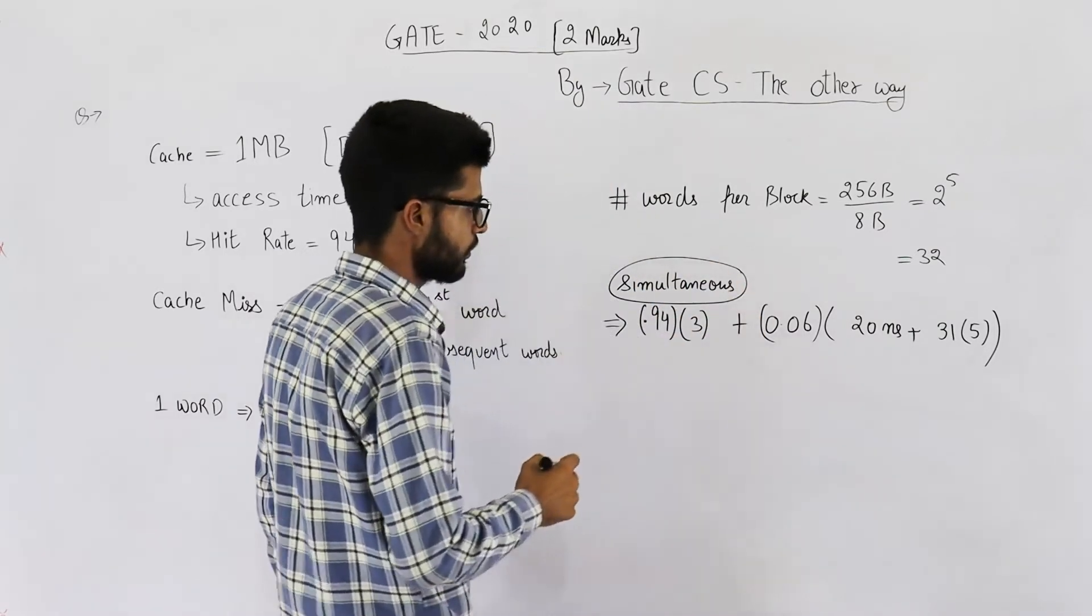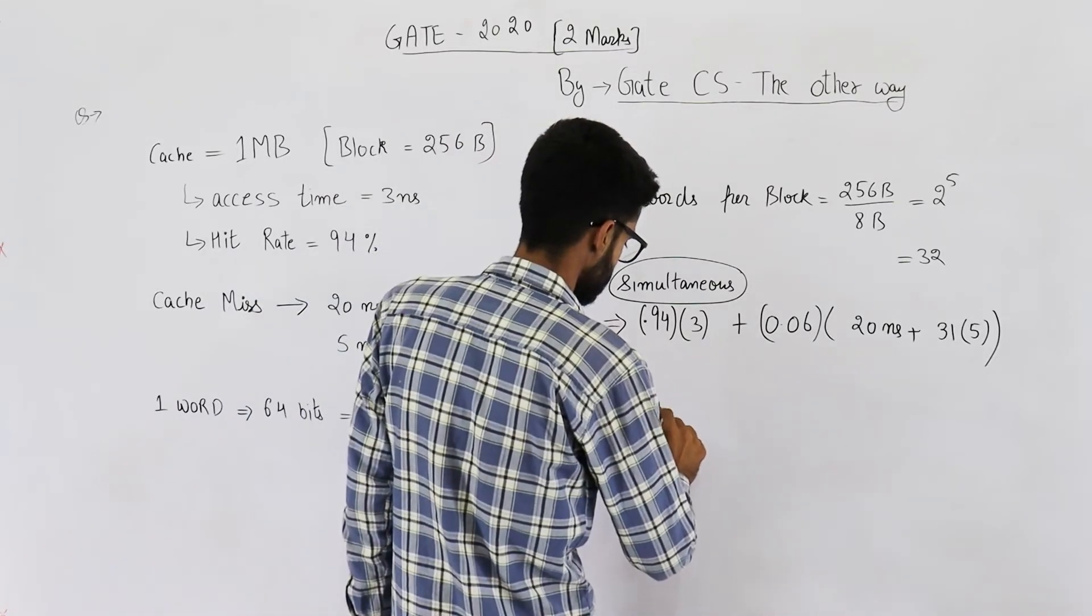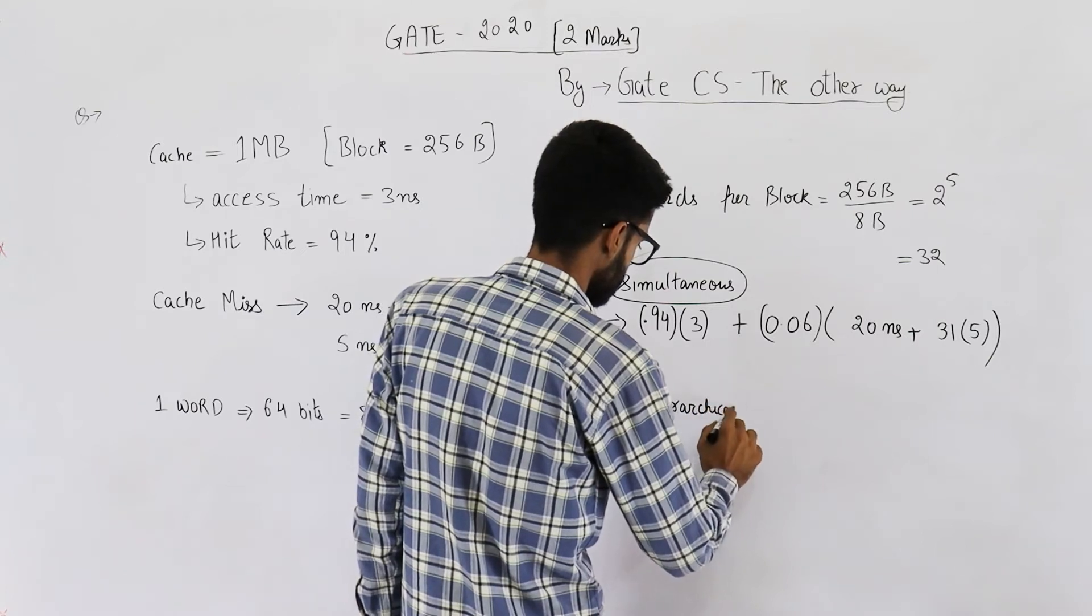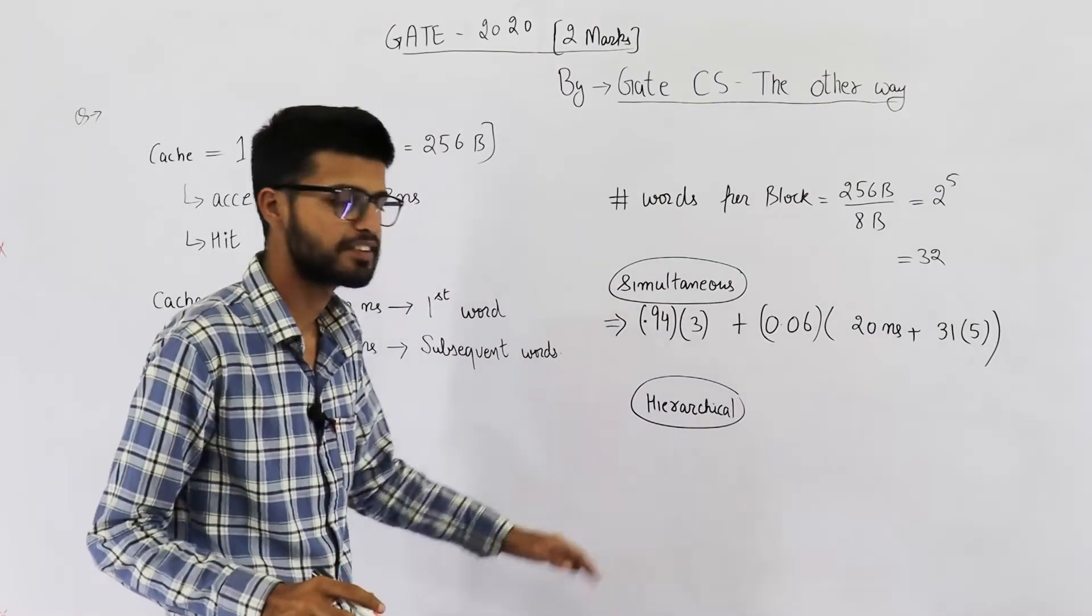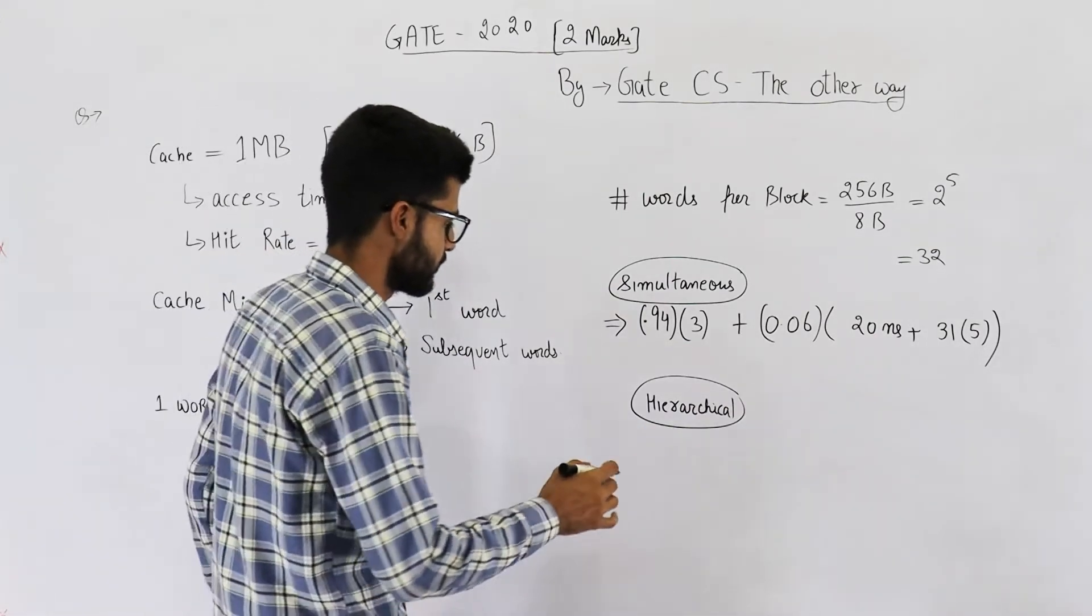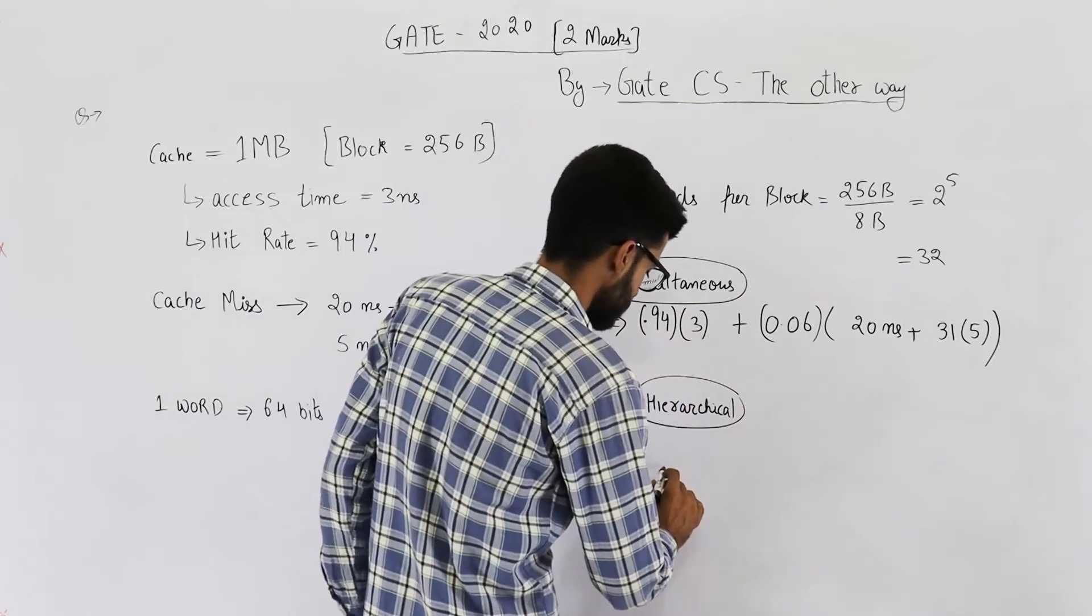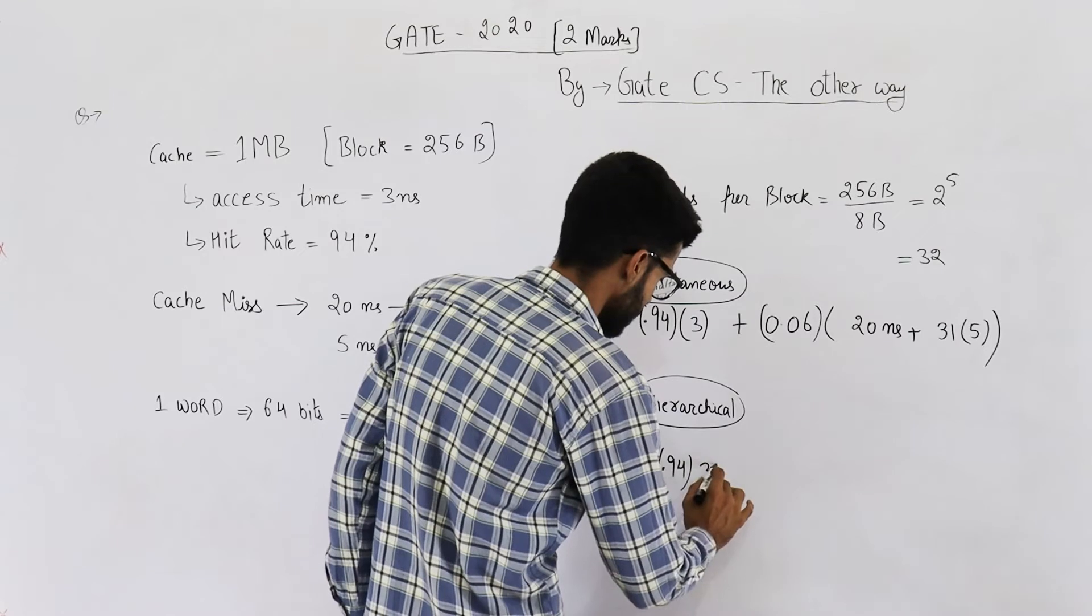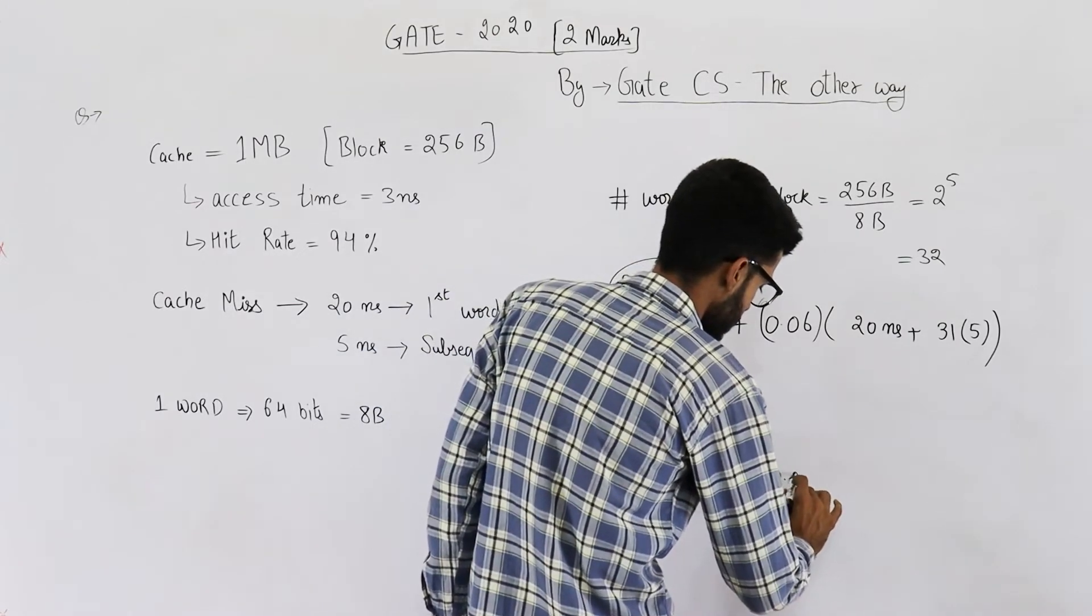And also let's see what happens in hierarchical. In hierarchical, this part is going to be the same - 0.94 into 3 nanoseconds plus 0.06.